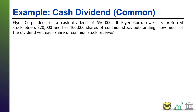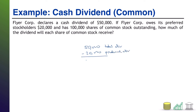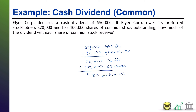We're not journalizing here — this is purely a math calculation. The total dividend is $50,000. The preferred stockholders are owed $20,000, and since they have priority over the dividends, the common shareholders will not see that amount. So $50,000 minus $20,000 preferred dividend leaves $30,000 for the common stock dividend. With 100,000 shares of common stock outstanding, each share of common stock is going to earn $0.30.